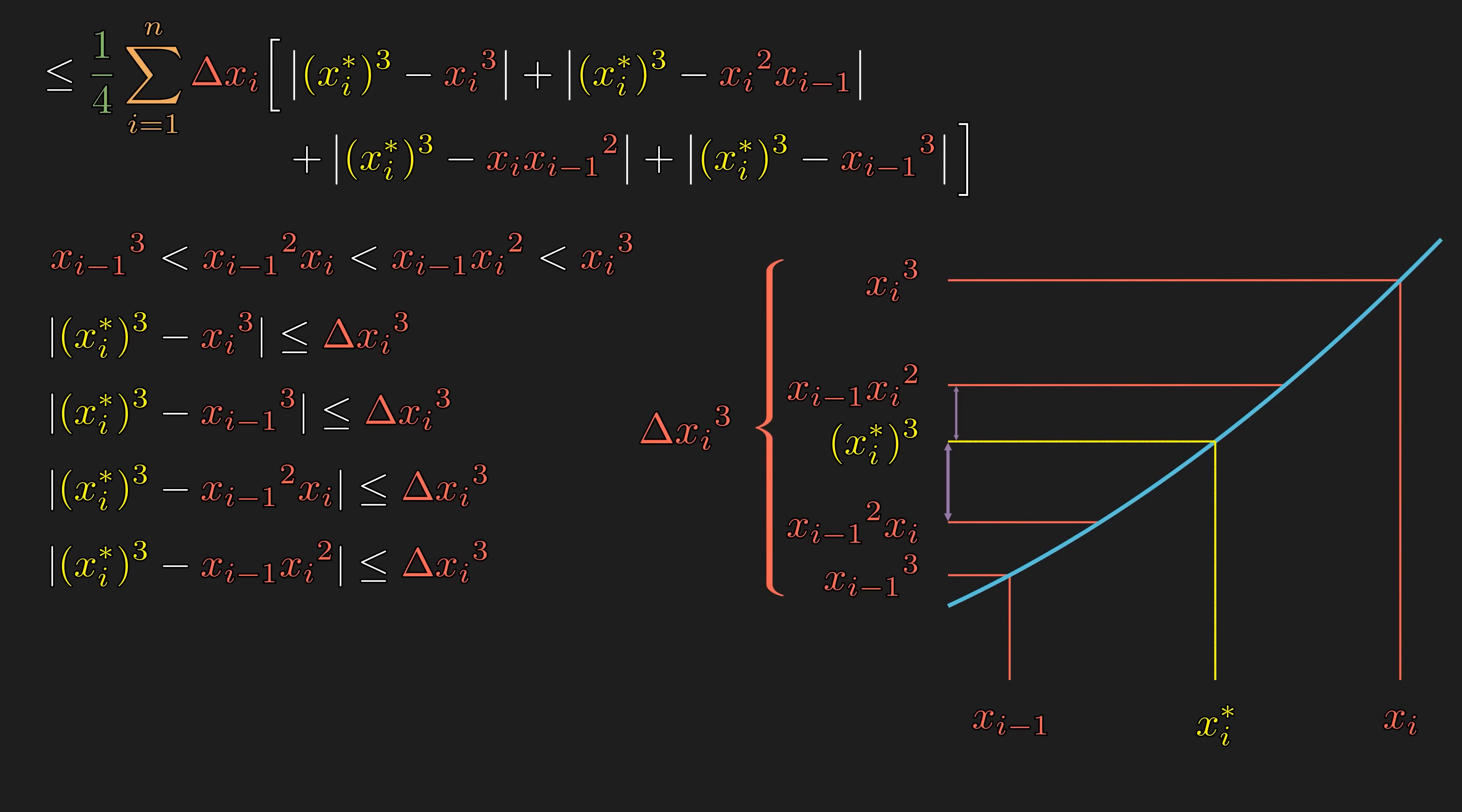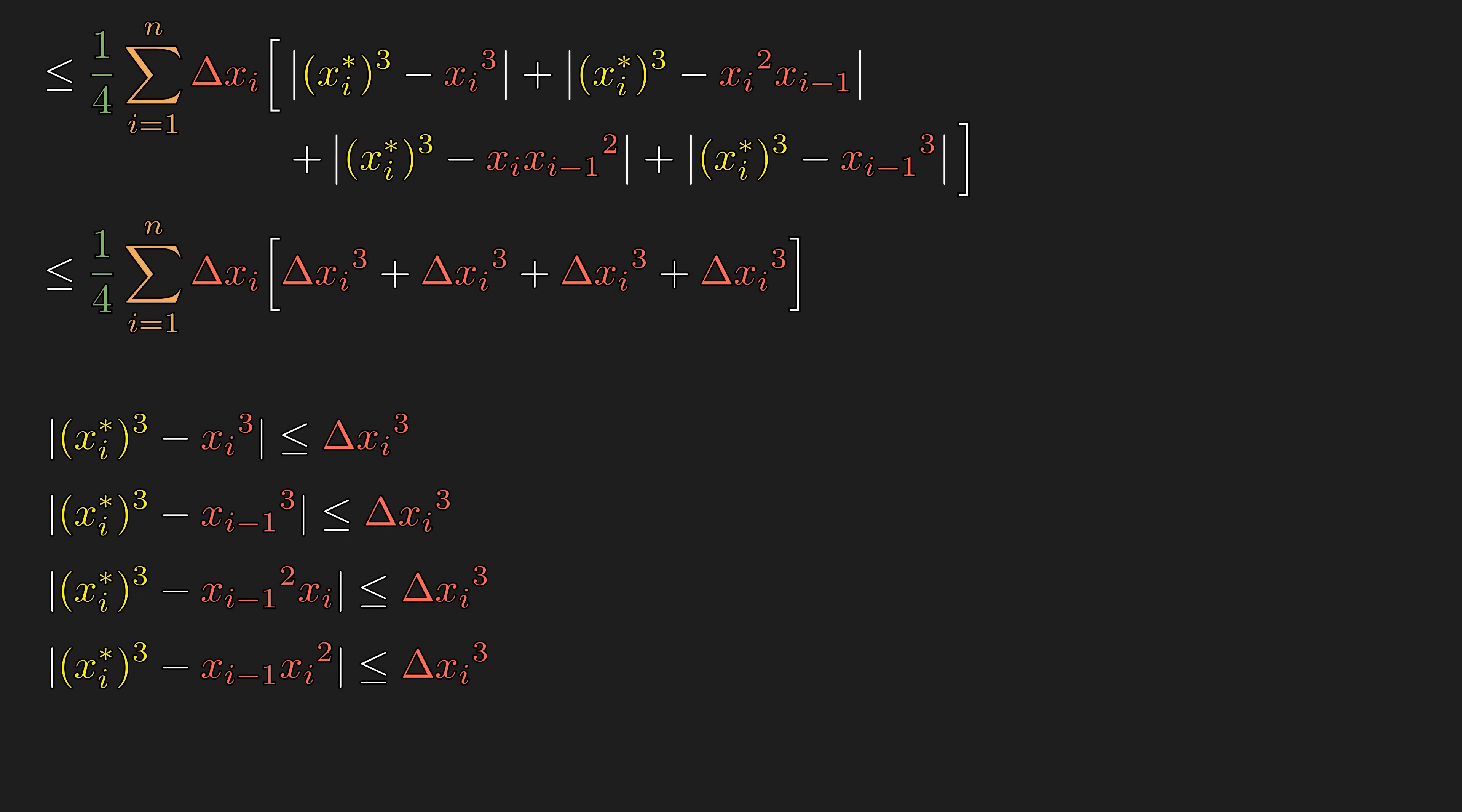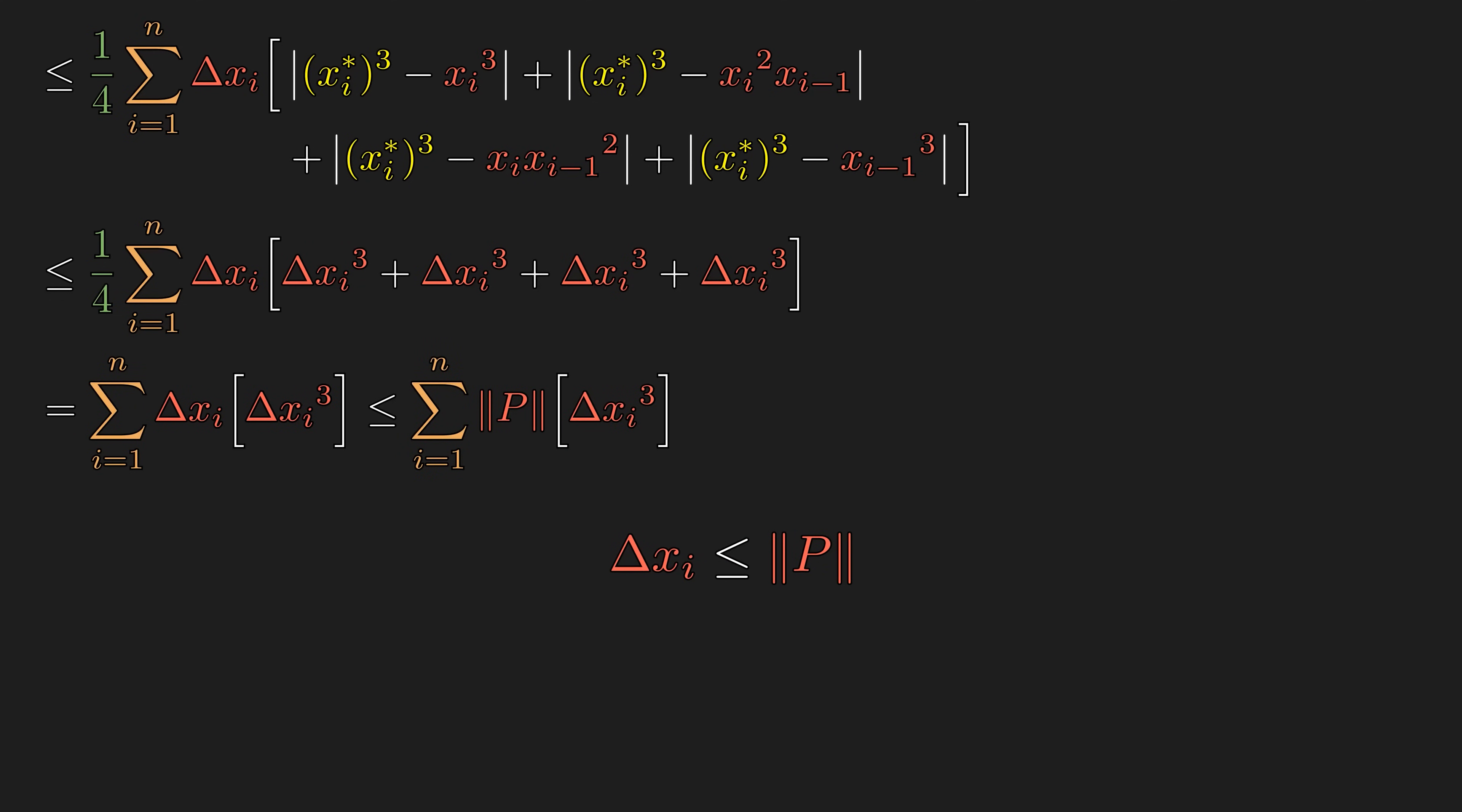Now that we have these four bounds, we can go back to the original problem. Each of these absolute values are less than or equal to the delta cubed. Then, we can cancel 4 with one-fourth. Now, each of these deltas is less than or equal to the maximum possible delta, which is the norm of the partition. The norm is independent of the index of summation, so we can pull it out of the sum. Lastly, the summation of delta cubed telescopes, leaving only the first and the last term. Pretty much all of the heavy lifting is done.